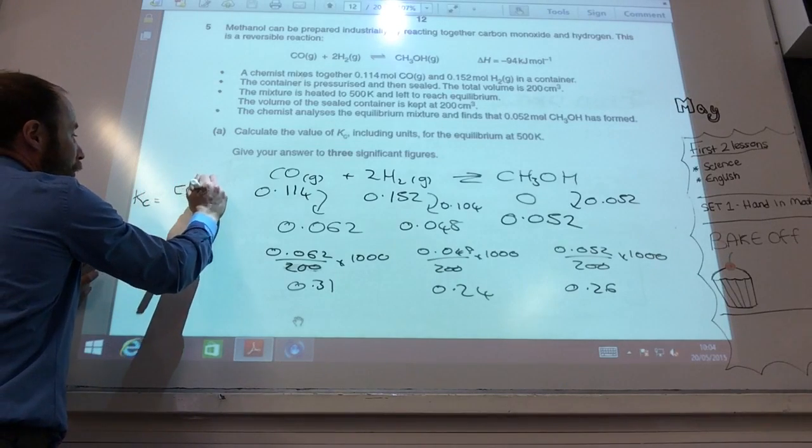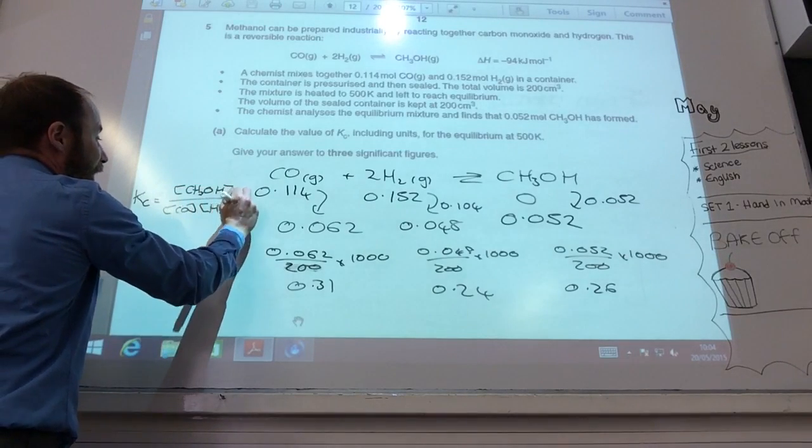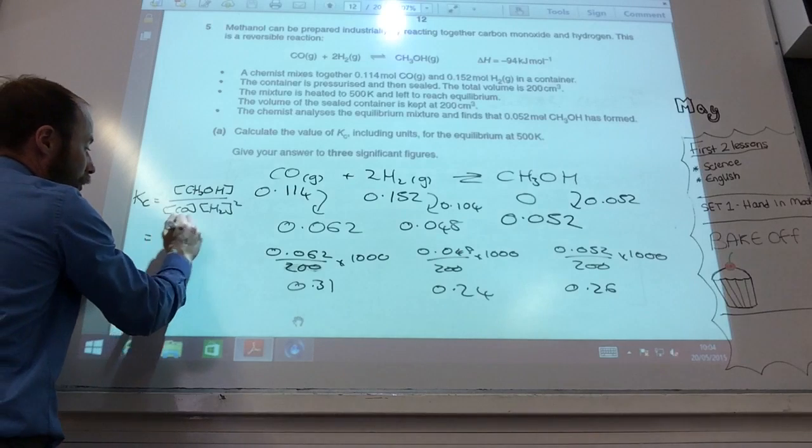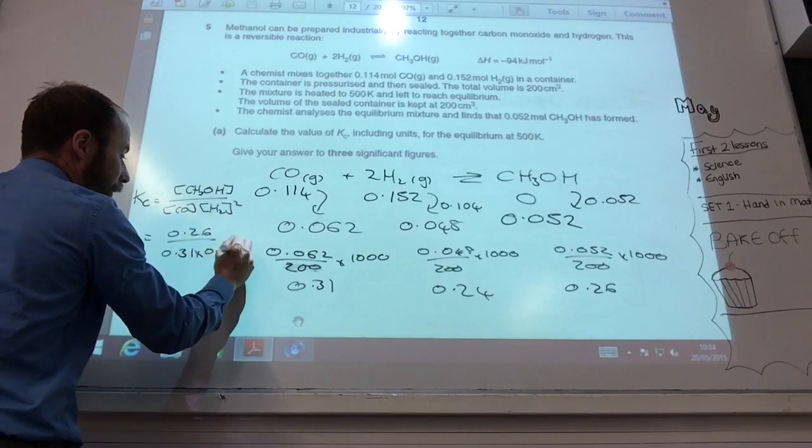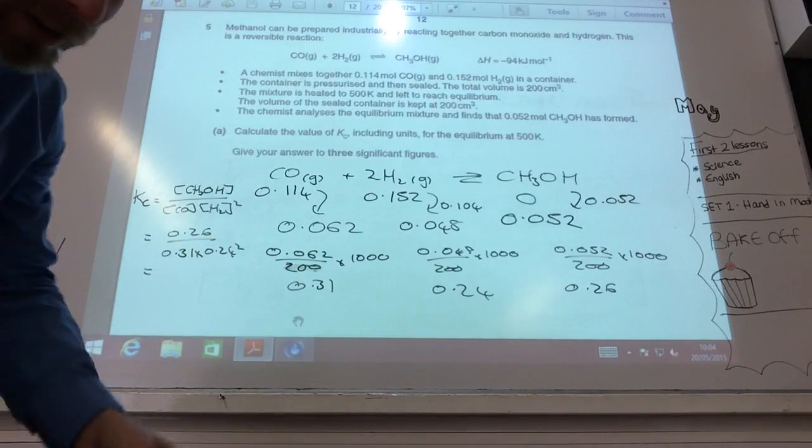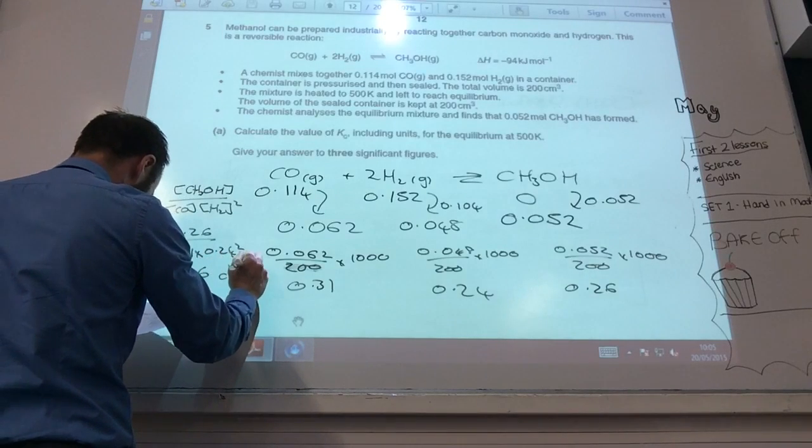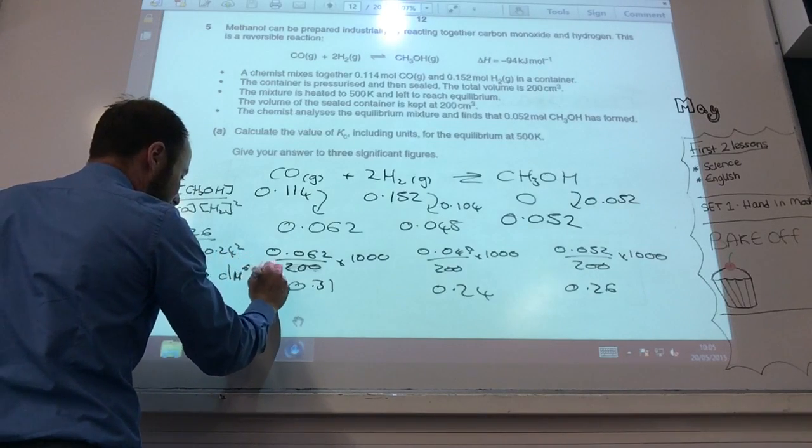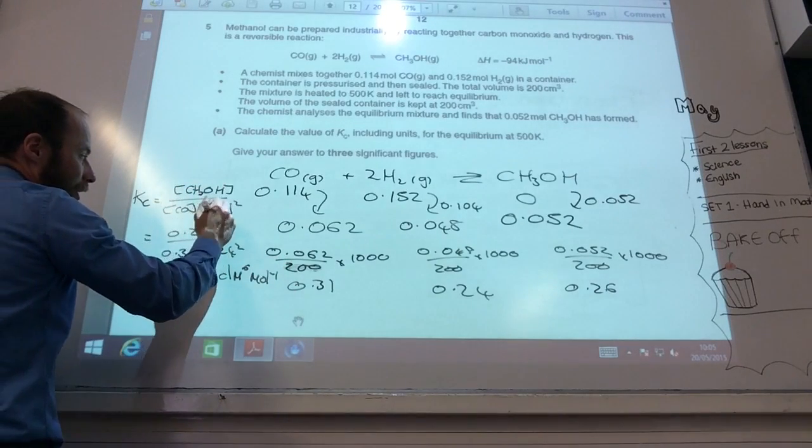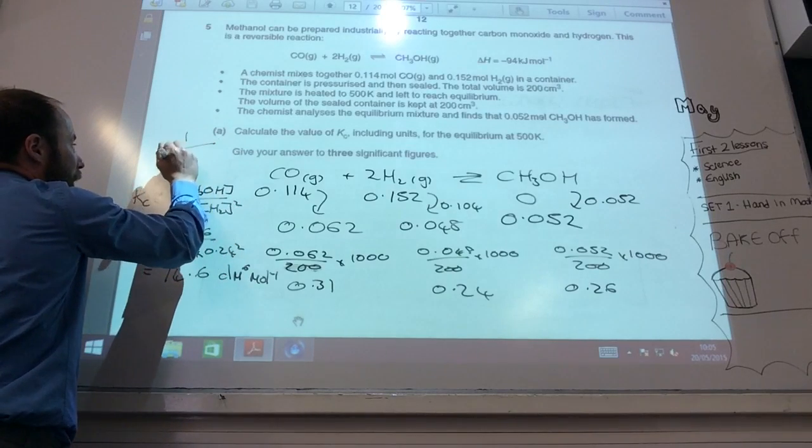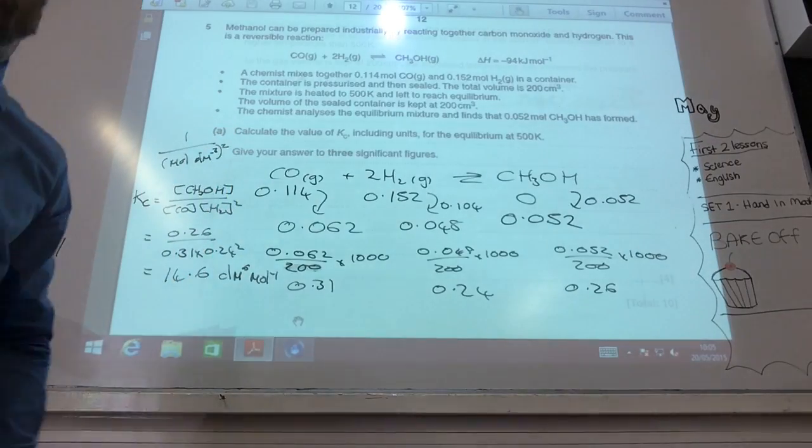To convert the equilibrium moles into concentrations, divided by 200 times by 1,000, to convert it into moles per decimeter cubed, then you need to put it into Kc. Kc is going to equal the concentration of methanol over the concentration of carbon monoxide and the concentration of H2 squared. So, if you do that, 0.26 divided by 0.31 times 0.24 squared, you should end up with the answer being 14.6, and the units are decimeters to the 6 moles to the minus 2.